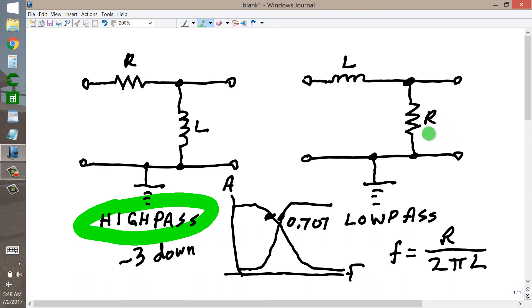And as with the RC circuit, you do have to have a finite non-zero resistance. Because if this were an open circuit, if R were an open circuit, none of the signal would get through. If it were a short circuit, all of the signal would get through.